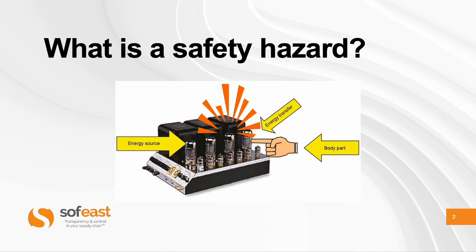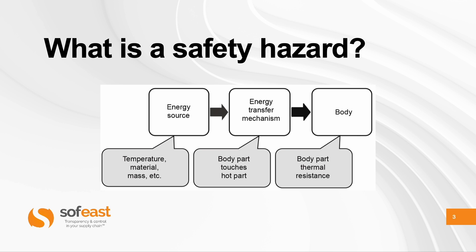The very first concept is: what is a safety hazard? You have some kind of device, an energy source that gets transferred onto the body part. For example, if a part is very hot and you put your finger on it, you're going to get burned, or maybe it might give you an electrical shock. These are two types of safety hazards, and the IEC standard explains it this way. All the screenshots here are from the standard.